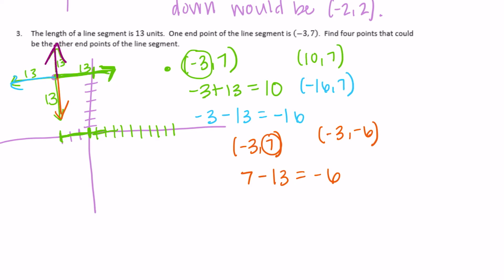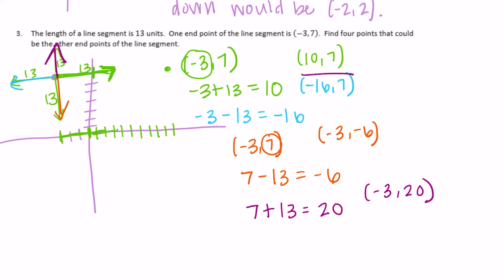For the last one, I want to go up, so I'll add 13 to my y-coordinate: seven plus thirteen equals twenty. So my last point is (-3, 20). In summary, the four possible endpoints are (10, 7), (-16, 7), (-3, -6), and (-3, 20).